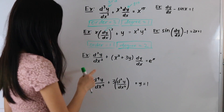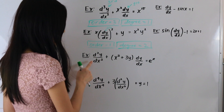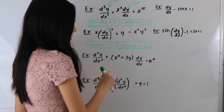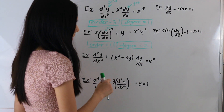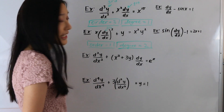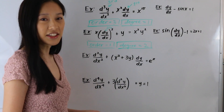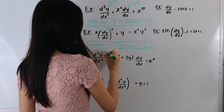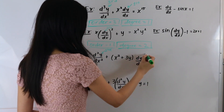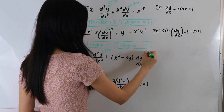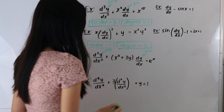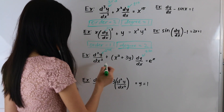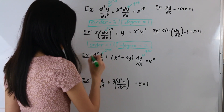In this next example, we have d squared y over dx squared plus x squared plus 3y times dy over dx, equal to e to the x. Let's label our derivatives. This is a second order derivative and this is a first order derivative, so the order is our highest order derivative, which is equal to 2.